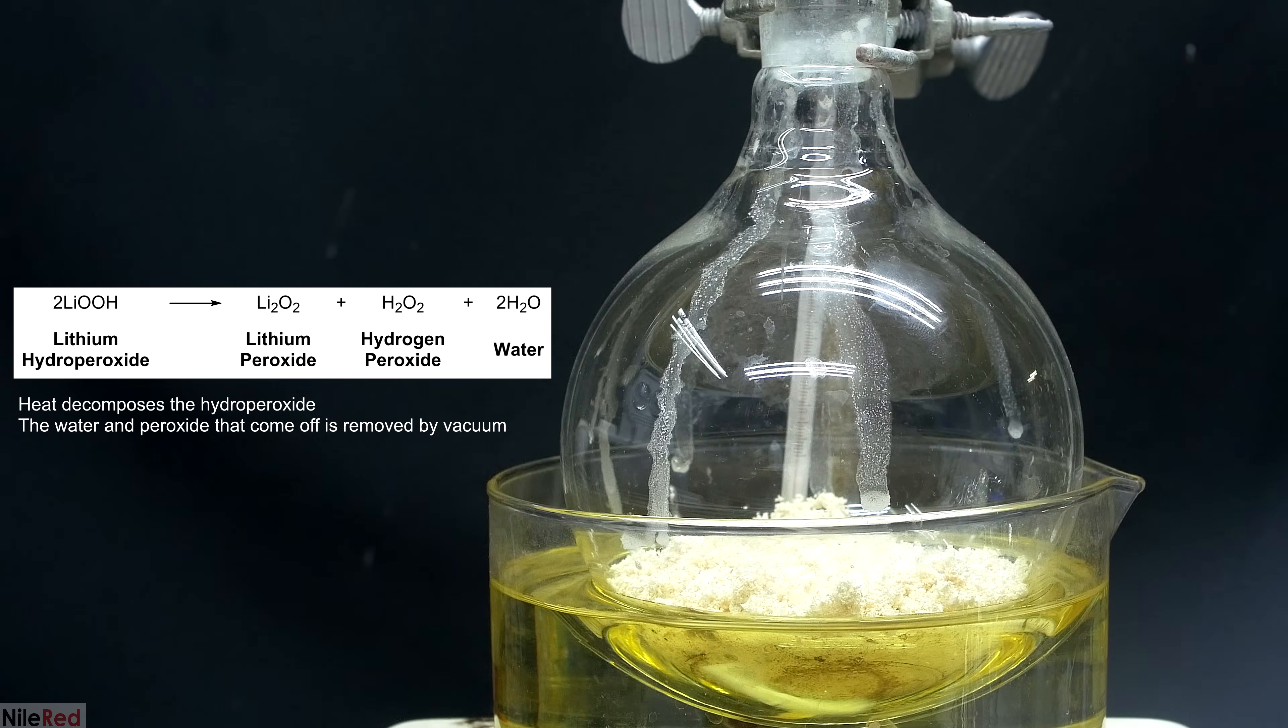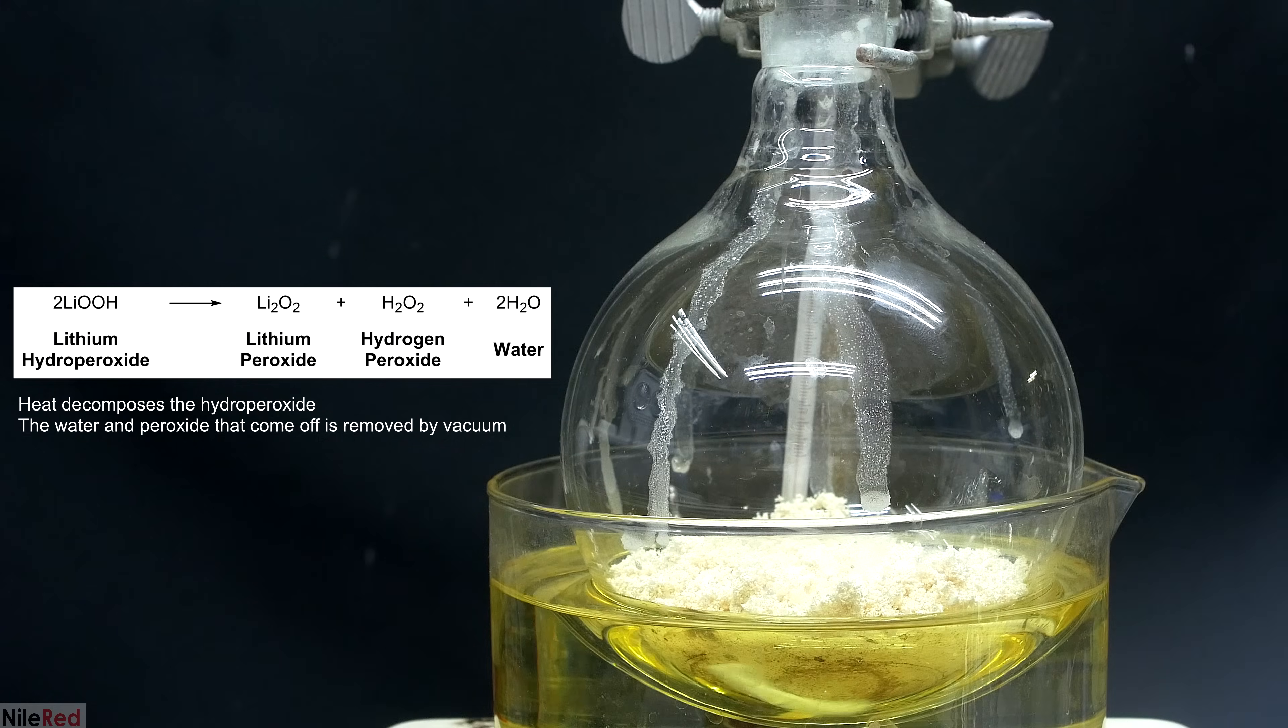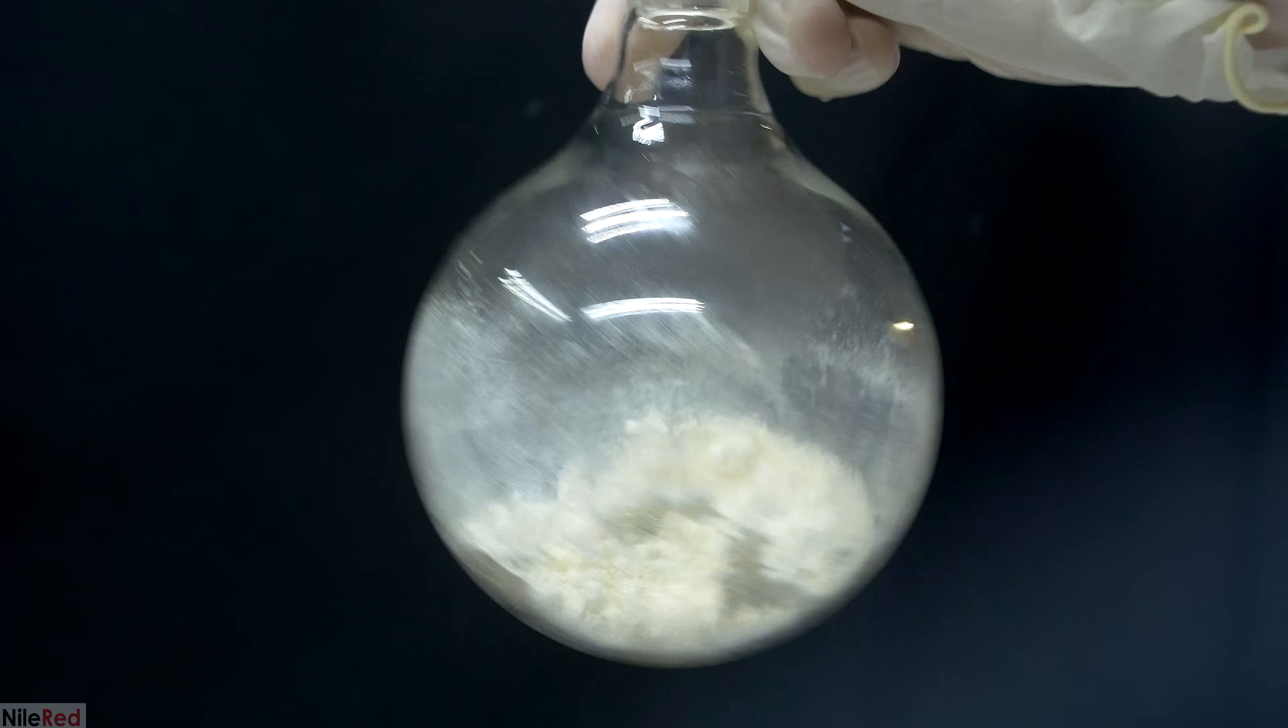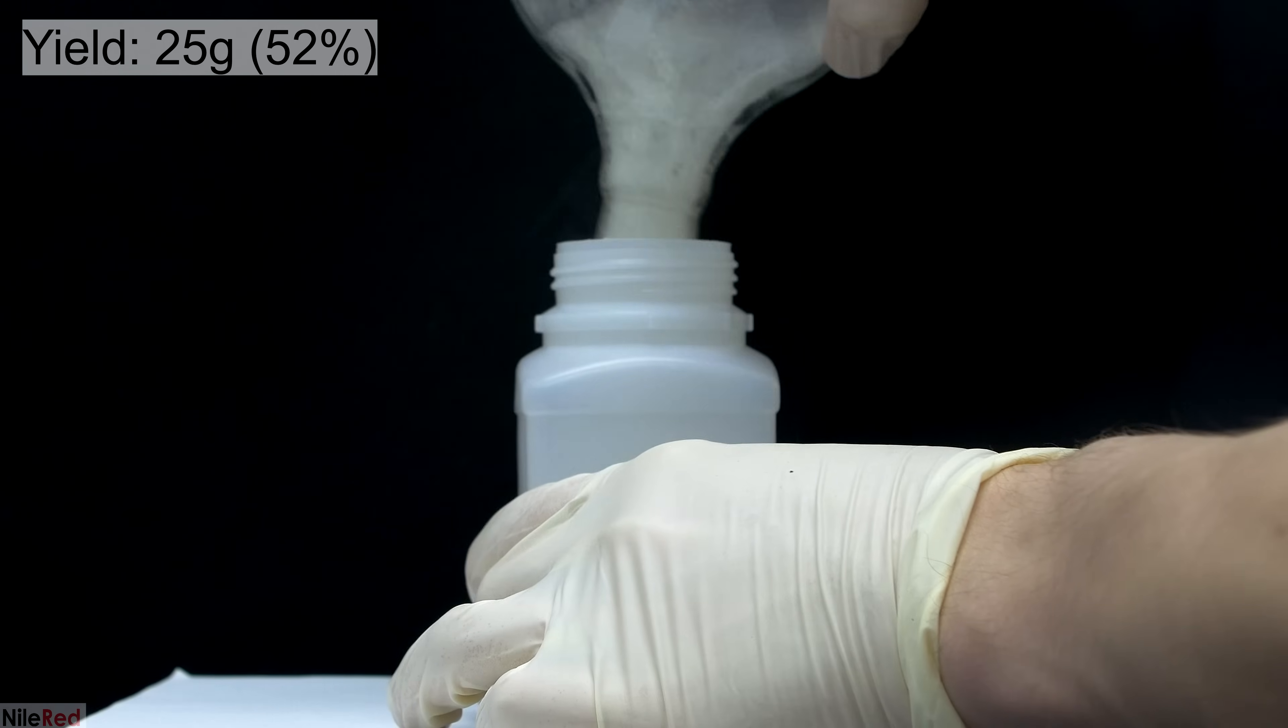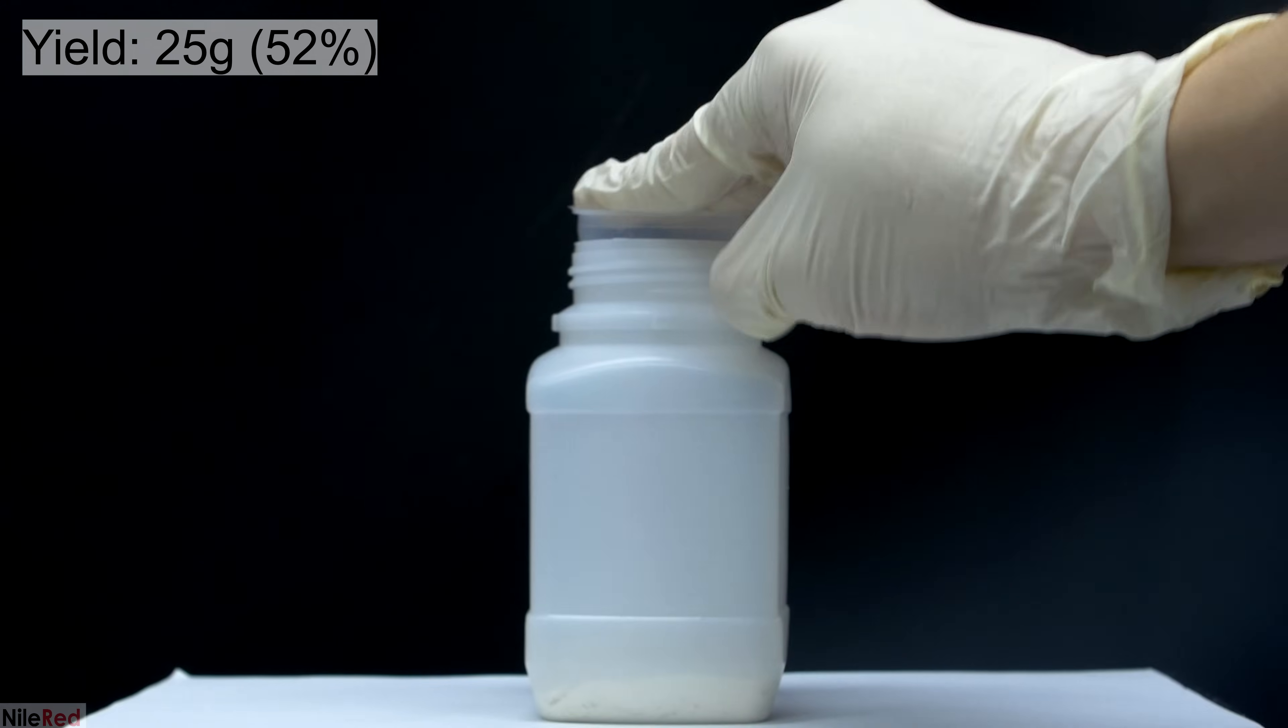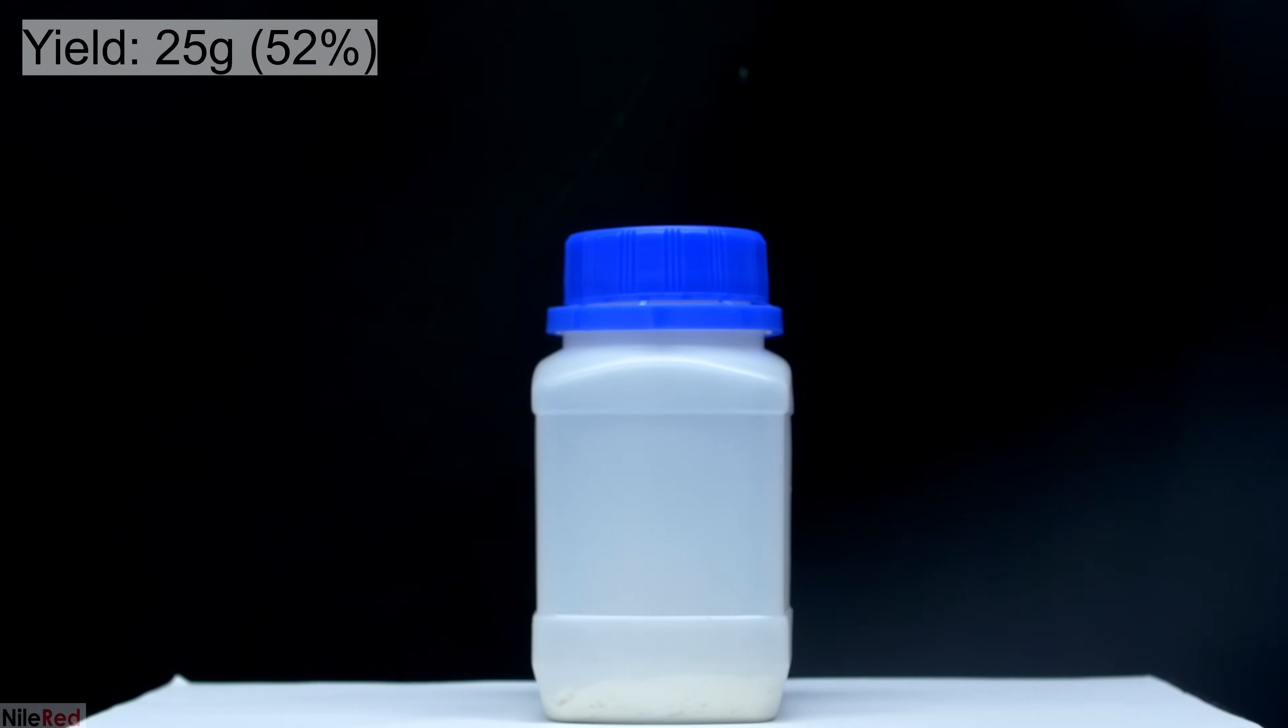This is our setup where the flask is under vacuum and we have an oil bath at around 120C. The dehydration of the hydroperoxide to the peroxide is pretty uneventful and visually not very much happens. I heated it under vacuum for about an hour and when I was done, I was left with a nice dry powder. The lithium peroxide was then transferred directly from the flask to a storage container. The final yield was about 25 grams, which corresponds to a percent yield of about 52%. The patent that I was following advertised a yield of about 83%, so a yield of 52 is a little bit on the low side.